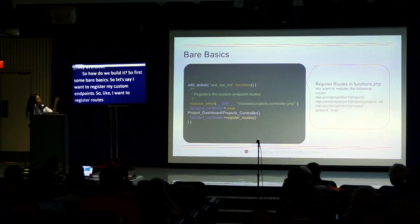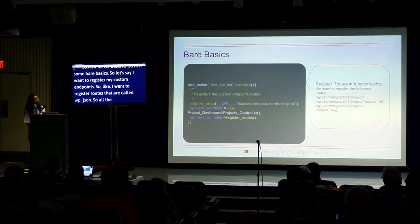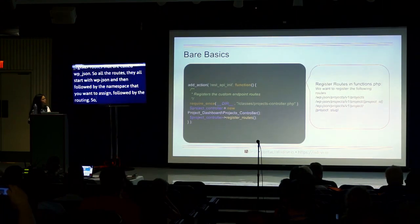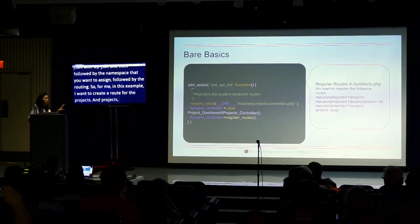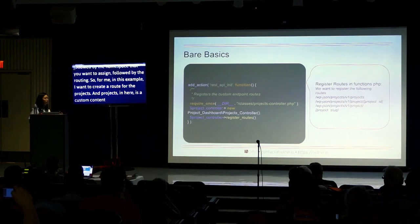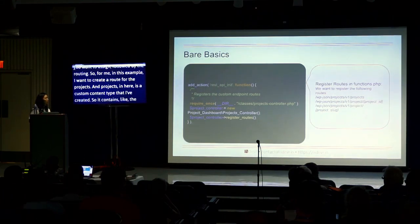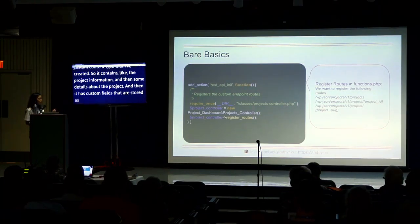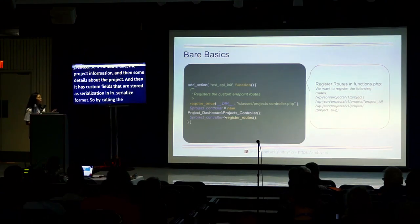So how do we build it? Here are some bare basics. To register custom endpoints — routes that start with WP-JSON — you assign a namespace and then the routing path. In this example, I want to create a route for projects, which is a custom post type I created containing project information and custom fields stored in serialized format.